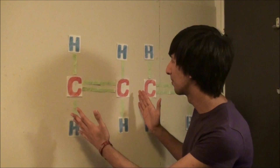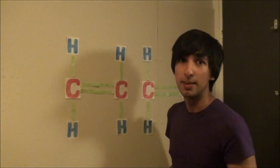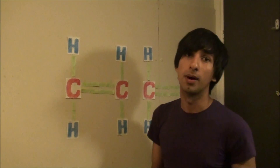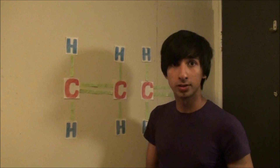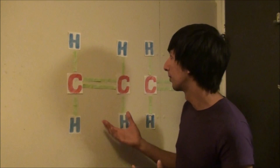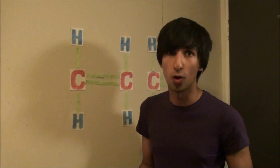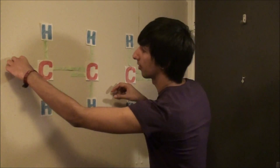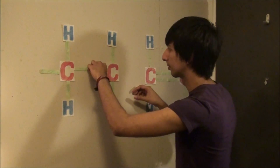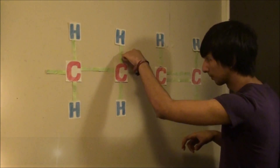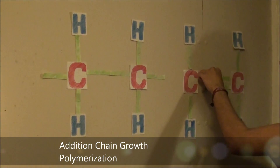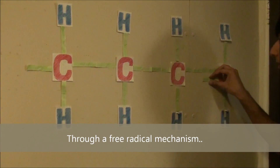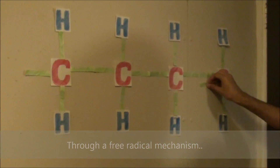This is a molecule of ethene, the basic building block or monomer which builds up the polymer polythene. The process by which these monomers of ethene come together to form the polymer polythene involves the carbon double bond opening. This process is called addition chain growth polymerisation and happens through a free radical mechanism, as this animation shows.